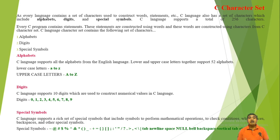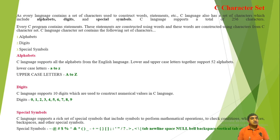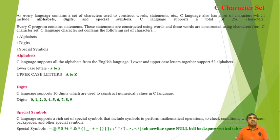C language supports all the alphabets from the English language. Lower and uppercase letters together support 52 alphabets. In lowercase it is small letter a to z, and in uppercase it is capital A to capital Z.